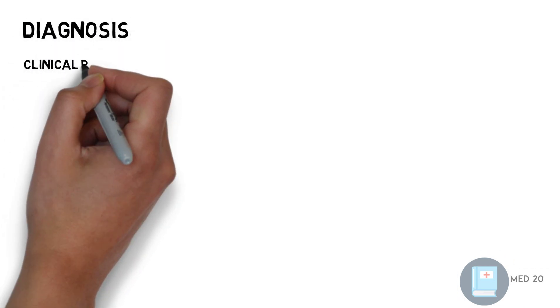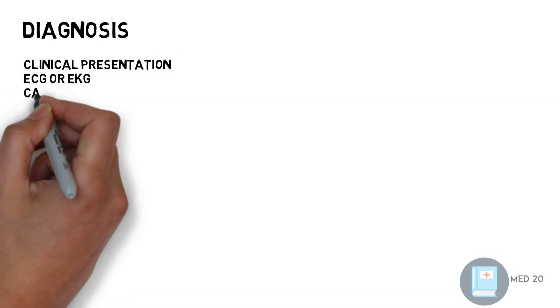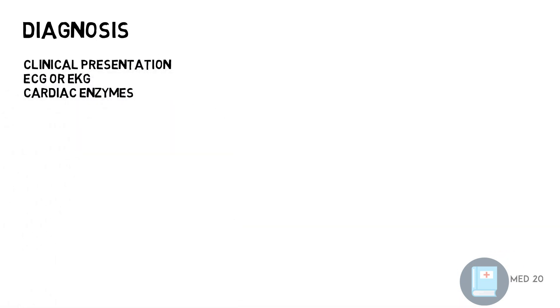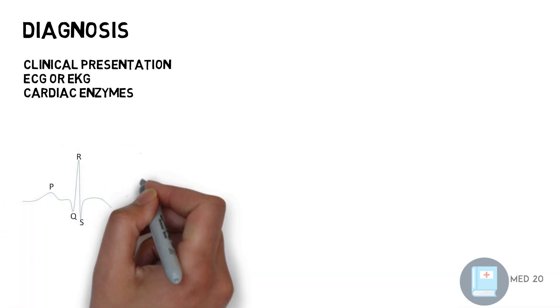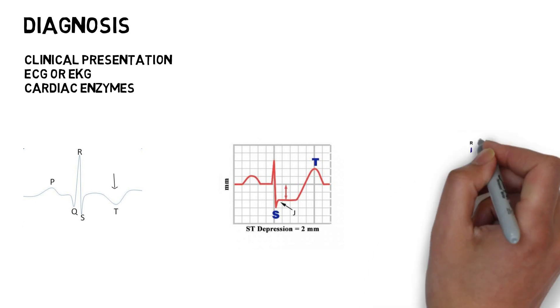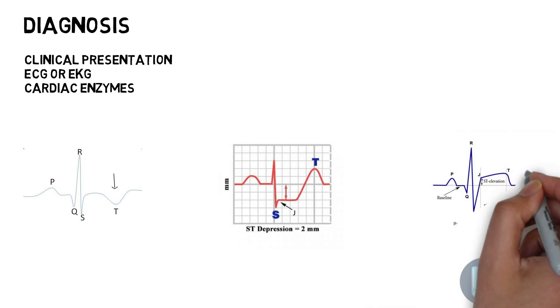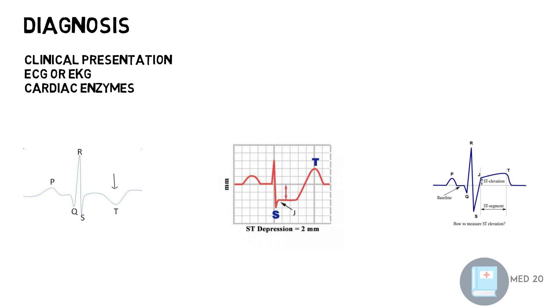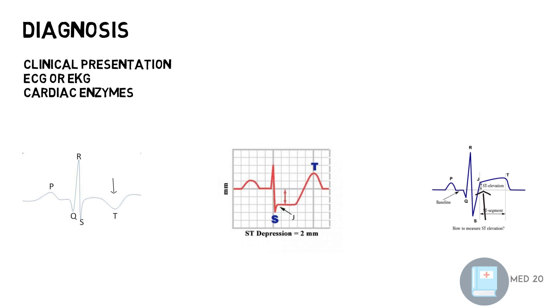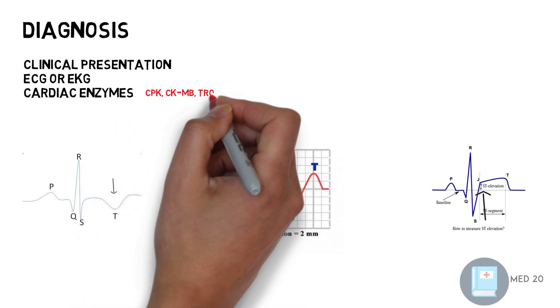The diagnosis of acute coronary syndrome is based on clinical presentation, ECG, and cardiac enzymes. On the ECG, unstable angina and non-STEMI present with T-wave inversion and ST depression, while STEMI presents with ST elevation. A true ST elevation requires elevation of 1 mm in two anatomical leads, or 2 mm in V2 and V3, or a new left bundle branch block. Cardiac enzymes include elevation of CK, CK-MB, and troponin.